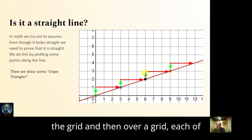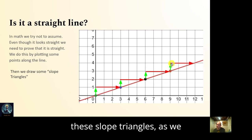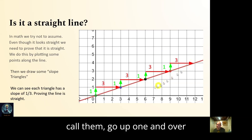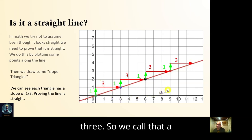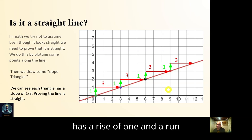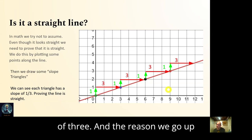Each of these slope triangles goes up one and over three, so we call that a slope of one over three — it has a rise of one and a run of three.